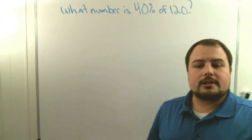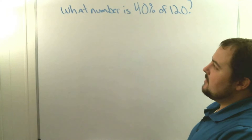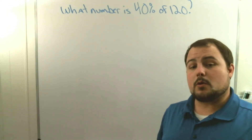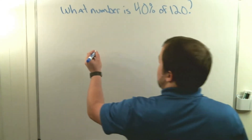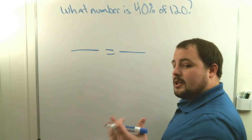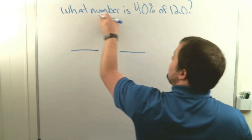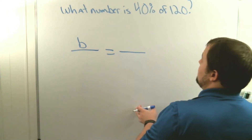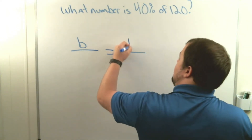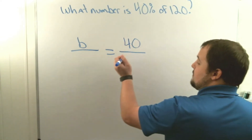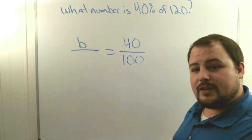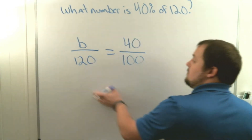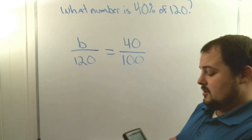In example number two, we're looking at something where the part is missing. In the first example we were missing the percent; now we're going to find the missing part. The question asks: what number is 40% of 120? Since 'is' doesn't give us the part, we put a variable — I'll use 'b' — in the part spot. Since we know it's 40 percent, that goes over 100. The word 'of' tells us 120 is the whole.